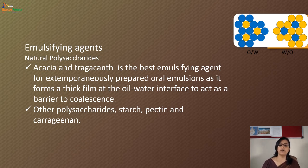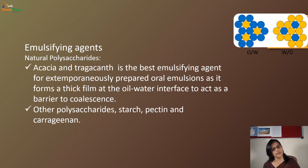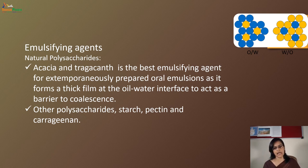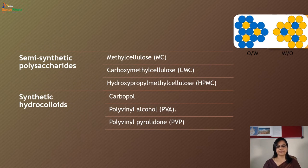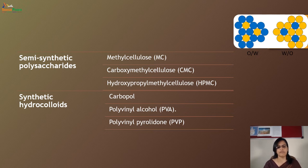Emulsifying agents can be classified as natural polysaccharides: Acacia and tragacanth are the best emulsifying agents for extemporaneously prepared oral emulsions, as they form a thick film at the oil-water interface to act as a barrier to coalescence. Other polysaccharides like starch, pectin, and carrageenan can also be used. Semisynthetic polysaccharides like methylcellulose and other cellulose derivatives such as CMC (carboxymethylcellulose) and HPMC (hydroxypropylmethylcellulose) are also used. Synthetic hydrocolloids include Carbopol, PVA, and PVP.